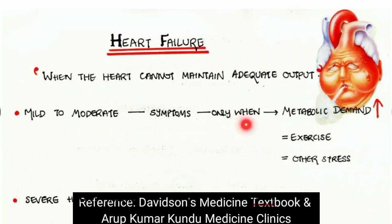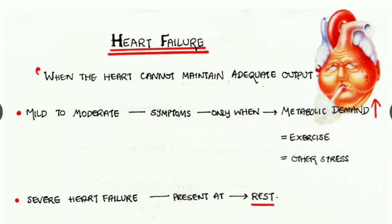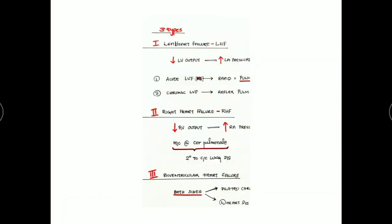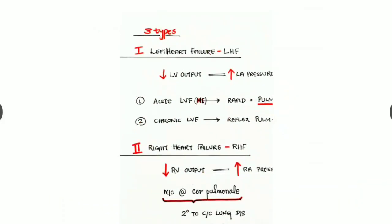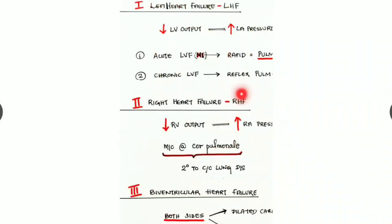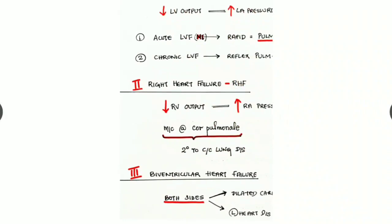If it is a mild to moderate heart failure, the symptoms are seen only when there is increased metabolic demand — for example, exercise and other stressful conditions. If it is severe heart failure, the symptoms are present even at rest. There can be three types: left heart failure, right heart failure, and biventricular heart failure.